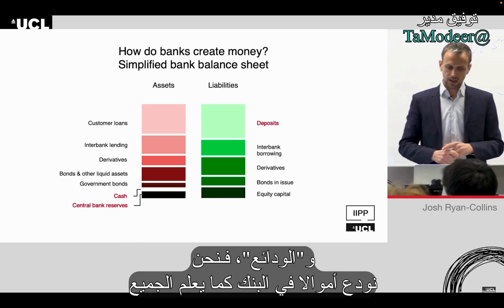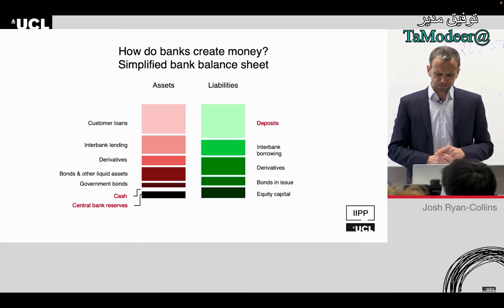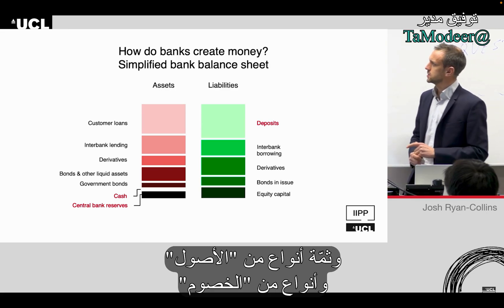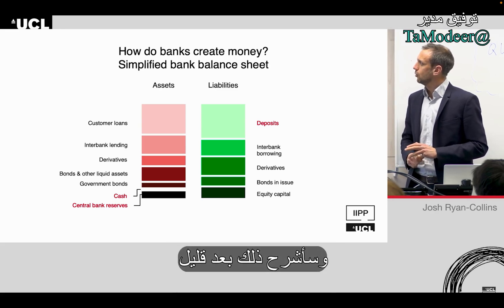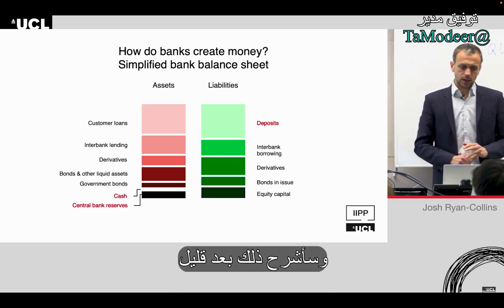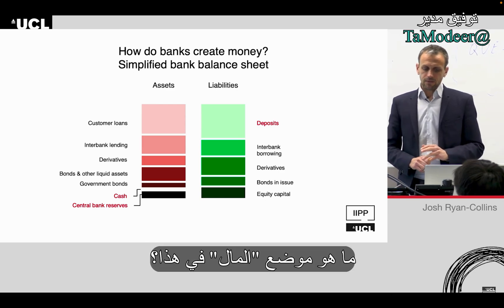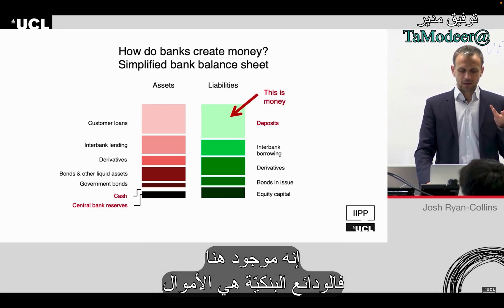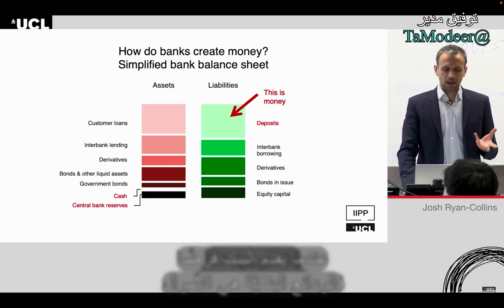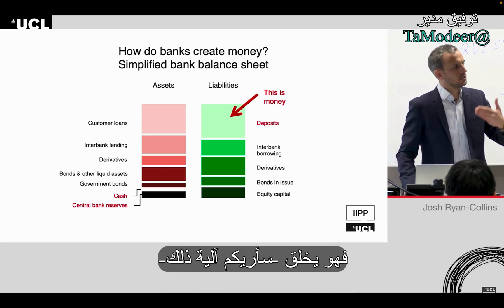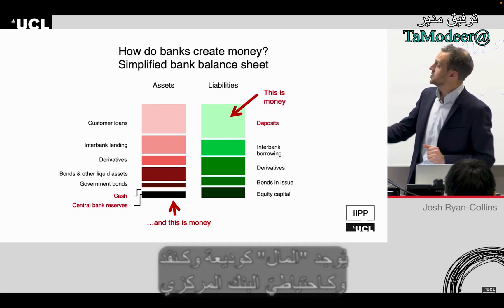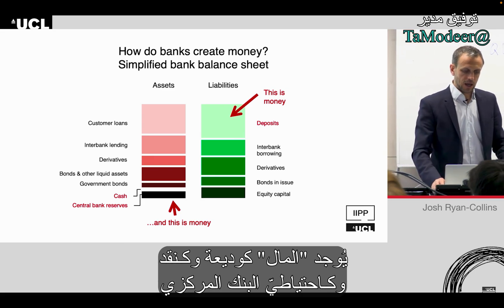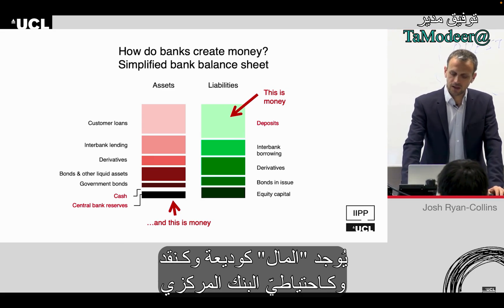On a balance sheet you have loans, you have deposits — everyone knows we deposit money in the bank — but then you have some other types of assets and liabilities. Where is money in this? A bank deposit is money. Money also exists as cash and central bank reserves.